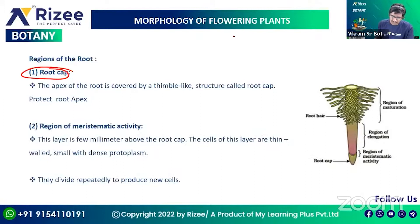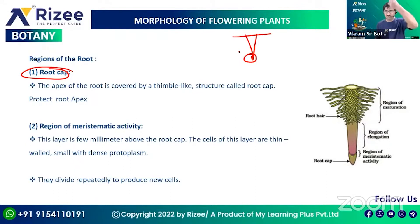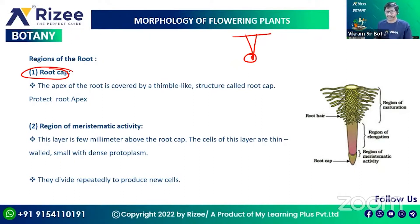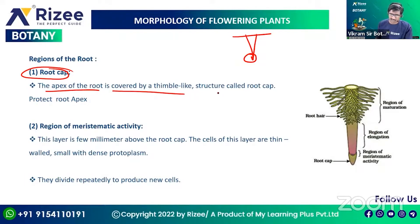What is the root cap? It is a small, thimble-like structure. The apex of the root covered with this thimble-like structure is called the root cap.